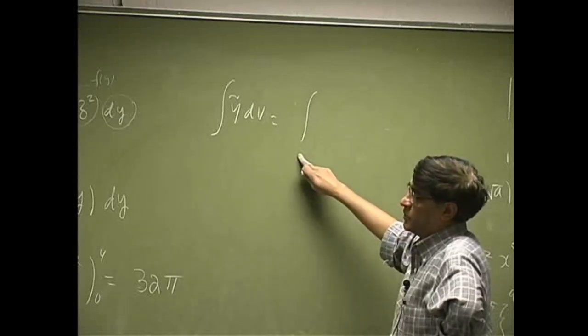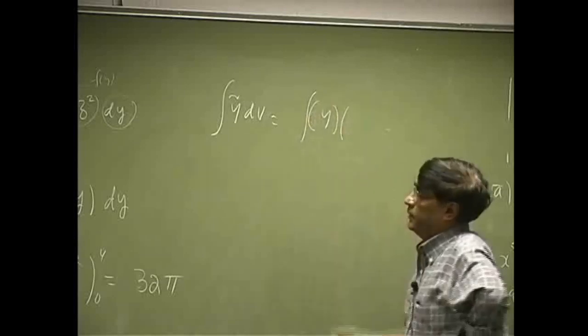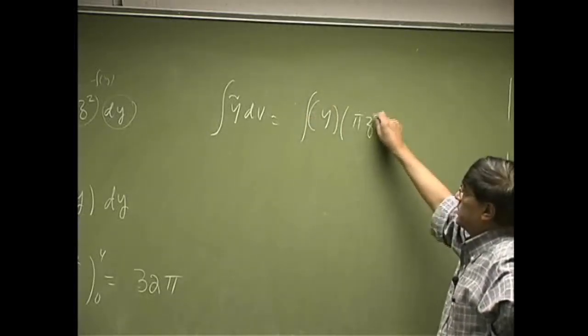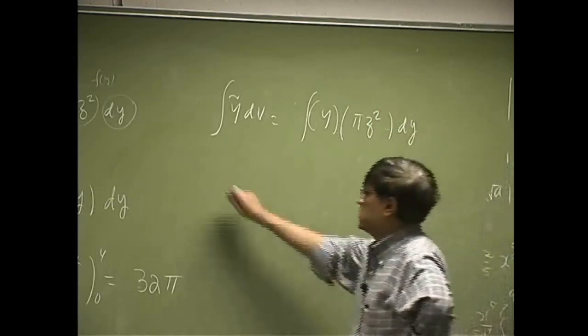Then, y tilde, we just found out that's going to be y. dv, we already know. That's pi z squared dy.